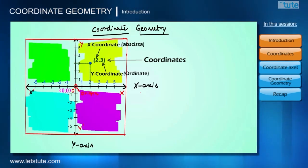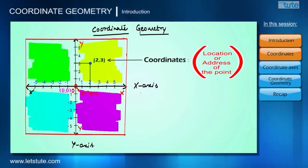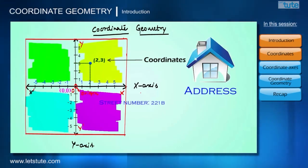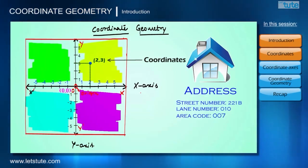Talking about the coordinates, we can say it is the location of a point, or in other words we can say it is the address of the point. For example, if I want to write the address of my home, I'll give the street number, the lane number, the area code, etc. All these things are references to reach my home.